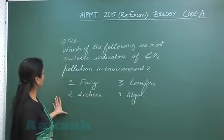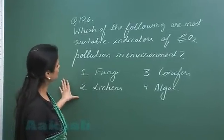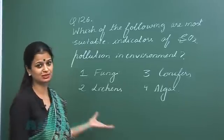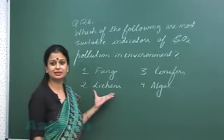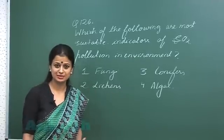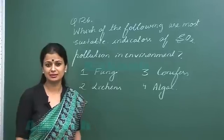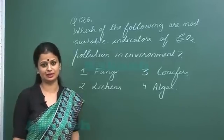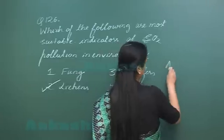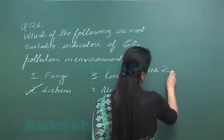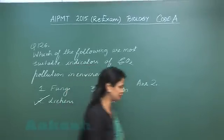Question 126: Which of the following are the most suitable indicator of sulfur dioxide pollution? Lichens are sensitive to sulfur dioxide — their growth is inhibited in polluted areas. So the right option here is option number 2.